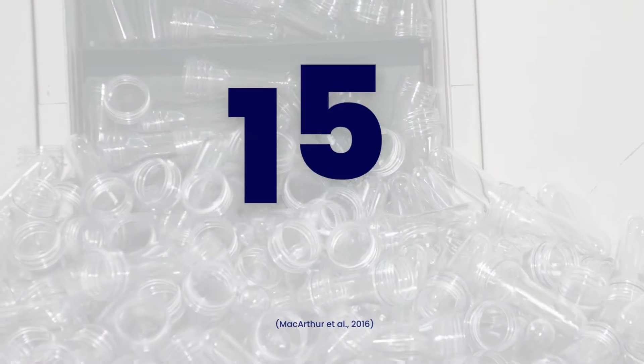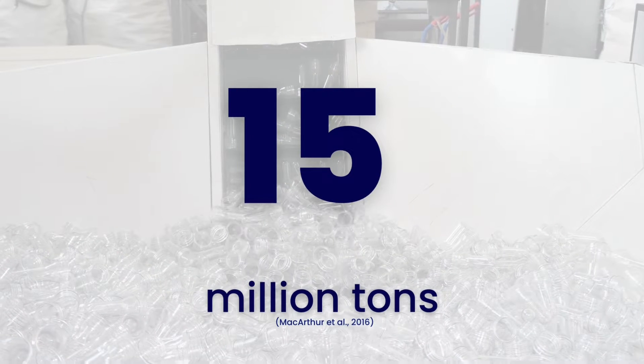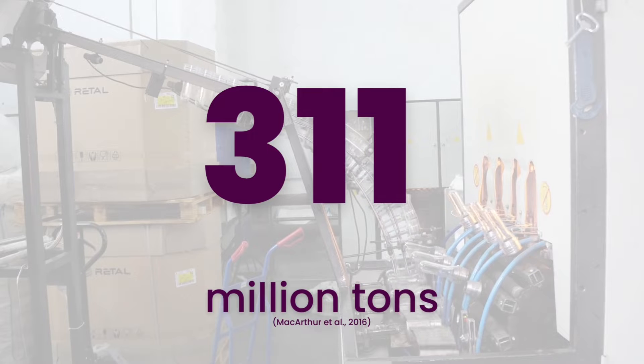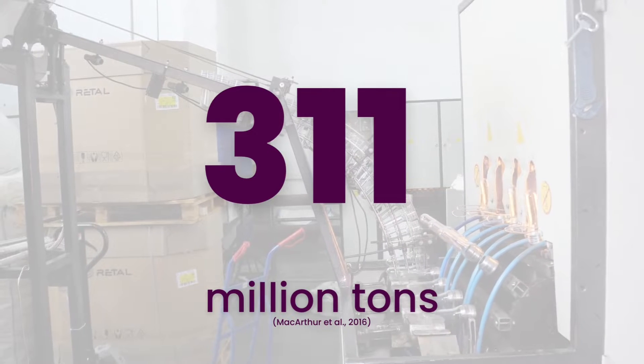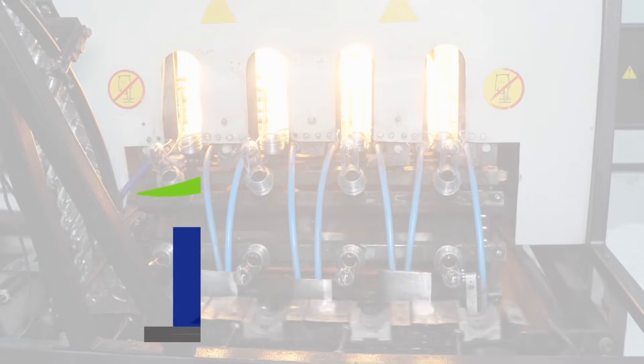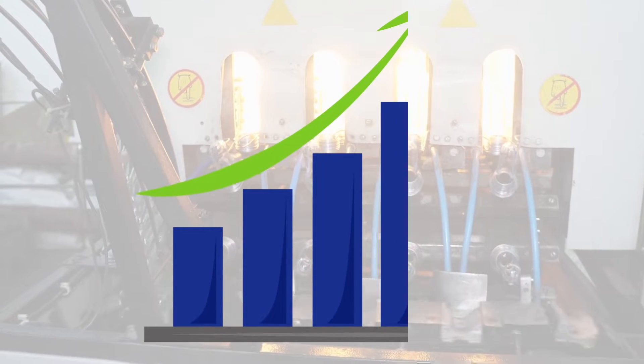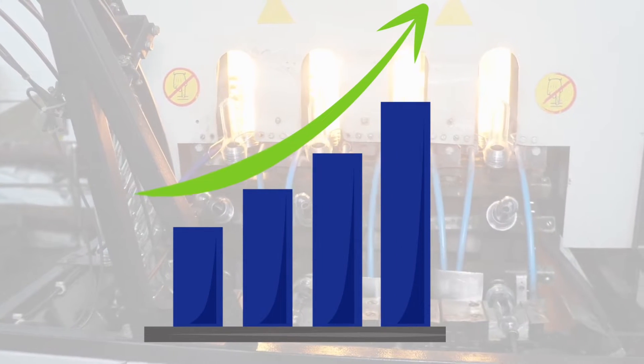Plastic production has grown from 15 million tons in 1964 to 311 million tons in 2014, and is only expected to double over the next 20 years and quadruple by 2050.